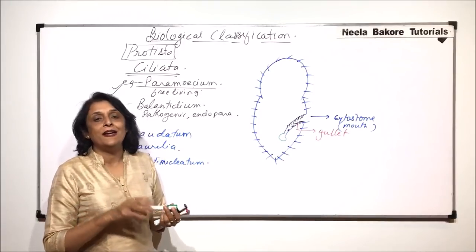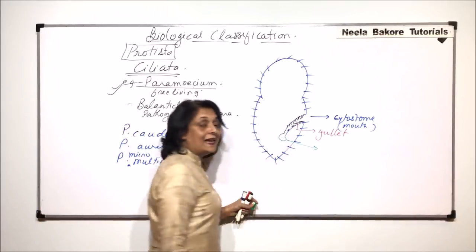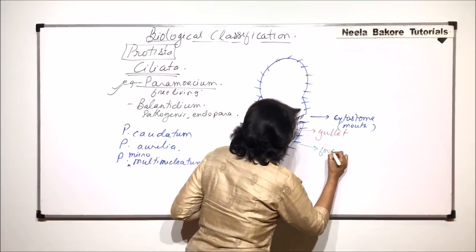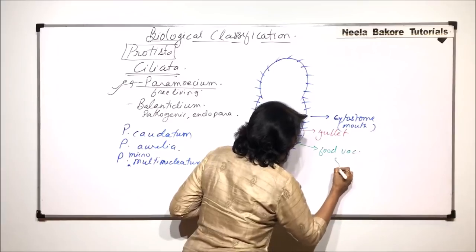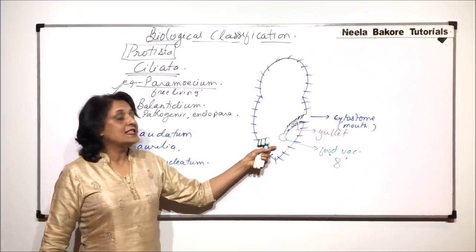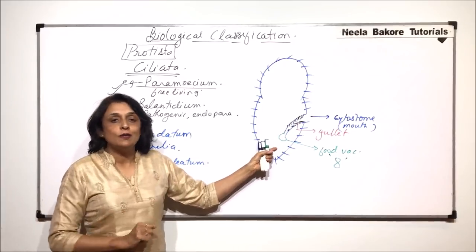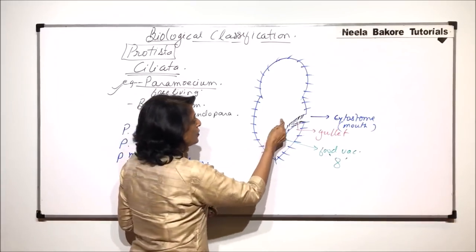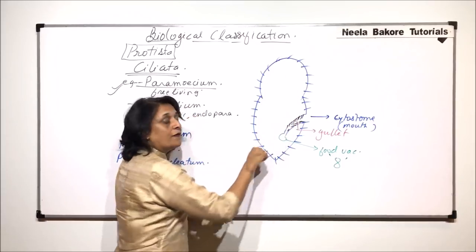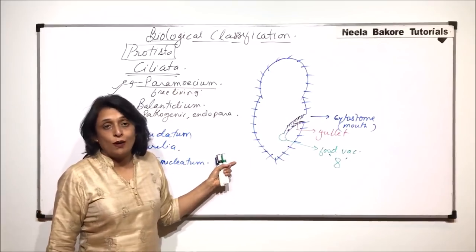This food vacuole normally takes a predefined path, and this path is like eight, it is in the shape of eight. So this is the food vacuole and it moves in the shape of eight, so that the digested food can be circulated all throughout the cell. It moves in the shape of eight so that the complete nutrition is circulated throughout the cell.